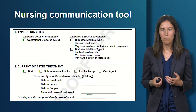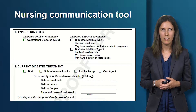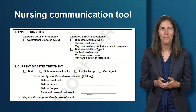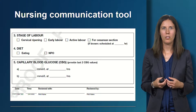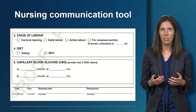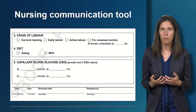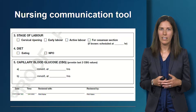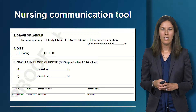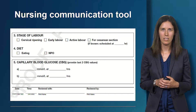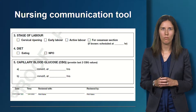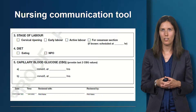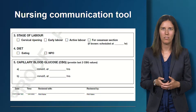If the patient is using an insulin pump, endocrinology should be involved, and it is useful to note the total daily dose of insulin from the pump. The third point is the stage of labor — whether early labor, active labor, or scheduled for elective or emergency c-section. The fourth is diet — whether the patient is eating or NPO. Lastly, it is very important to record the two most recent capillary blood glucose readings and when they were done. This paper chart information should be placed in the chart as part of the patient's medical record.